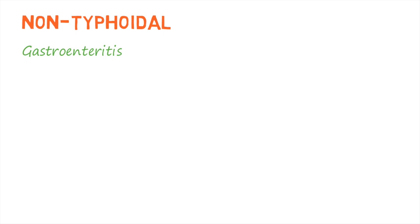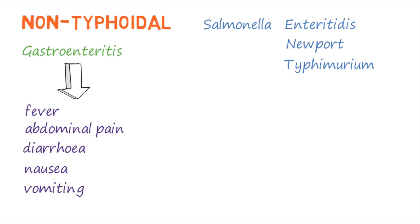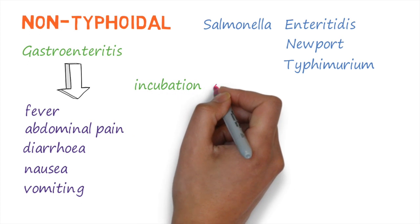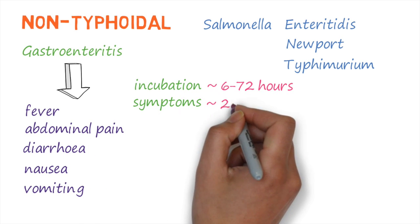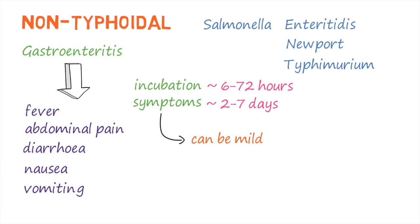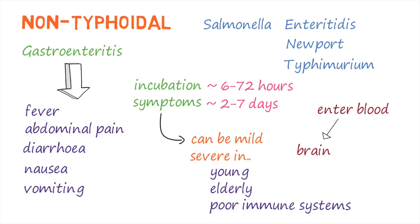Non-typhoidal salmonellosis is typically characterized by gastroenteritis and is commonly caused by Salmonella types like Enteritidis, Newport, and Typhimurium. Symptoms are usually fever, abdominal pain, diarrhea, nausea, and sometimes vomiting. These symptoms usually occur between 6 to 72 hours after exposure and can last about 2 to 7 days. Although the disease can be relatively mild in most people, it can be quite severe in the young, elderly, and those with poor immune systems. Sometimes the bacteria can enter the blood and infect other organs like the brain or urinary tract, causing local complications.